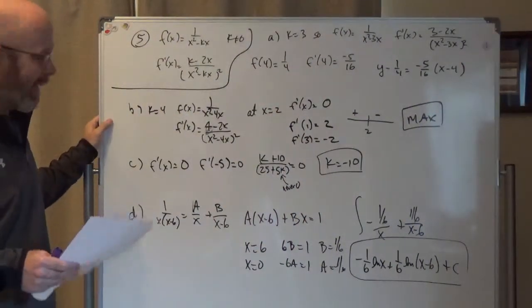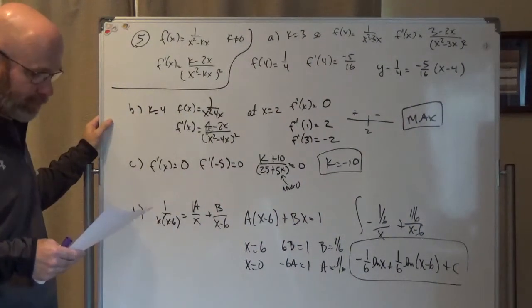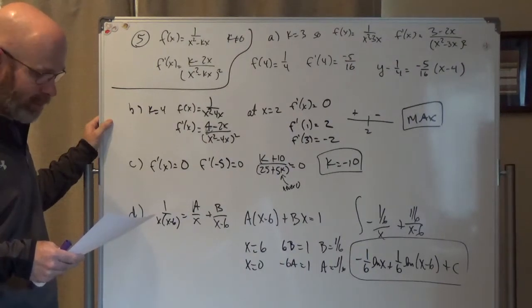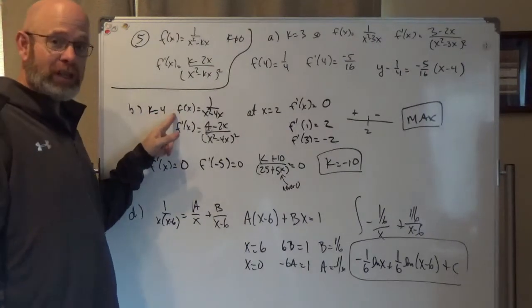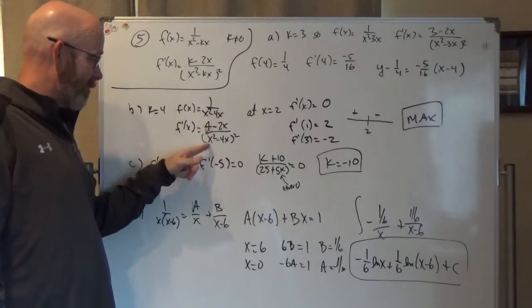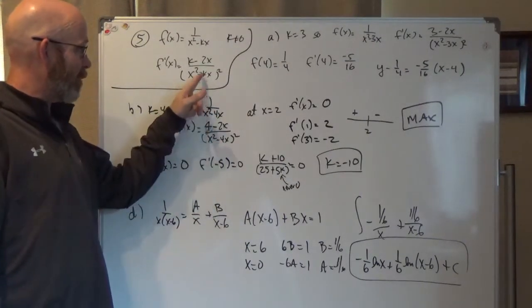Second question said that k equals 4 this time, and then determine whether there's a minimum, a maximum, or neither at x equals 2. So again there's my function with the 4 in it. There's my derivative with the 4 in it. So all I did was just put 4 in for k.